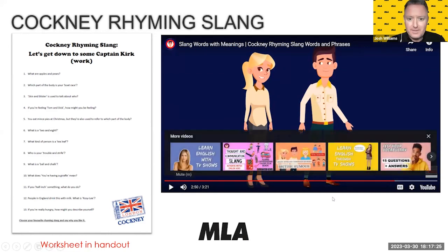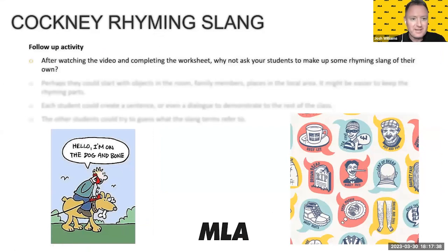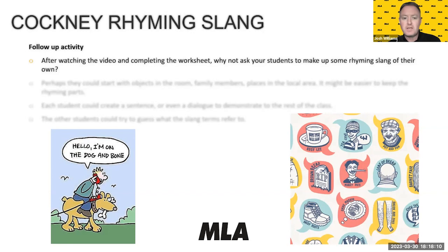As you can see, it's almost like another language there. I think you can put that in a class and have students really enjoying it. As a follow-up activity, after watching the video and completing the worksheet, why not ask your students to make up some rhyming slang of their own? This is something that is still evolving — even though it has origins more than 100 years ago. There's a popular DJ in the UK called Pete Tong, and it's quite common to say 'everything has gone Pete Tong', meaning everything's gone wrong. That expression can't be more than 20 or 30 years old.